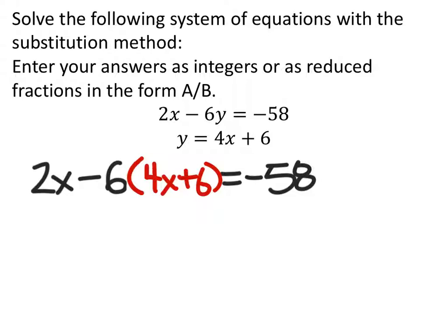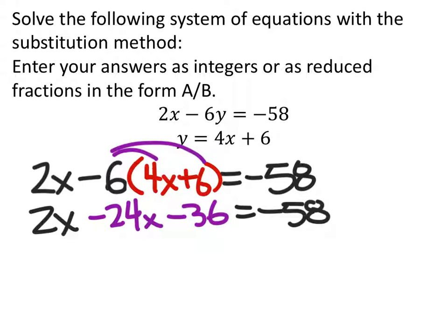From this point, it's very easy to solve because we can distribute that. We would consider that a negative 6. So we have 2x minus 24x minus 36 equals negative 58.